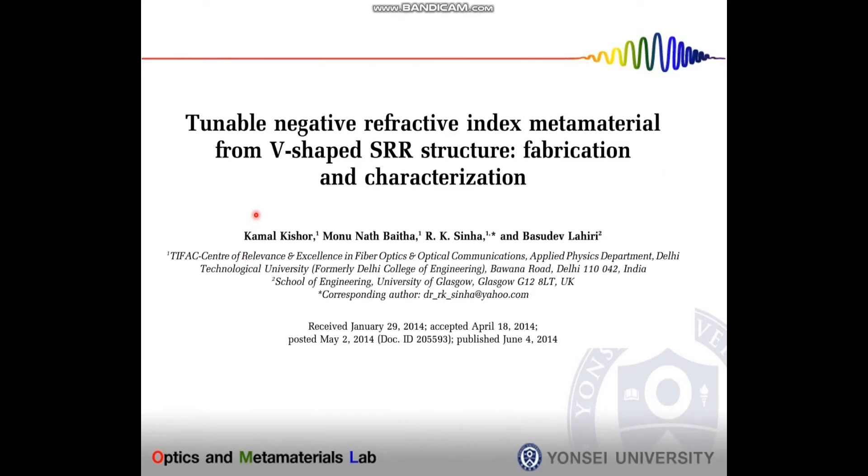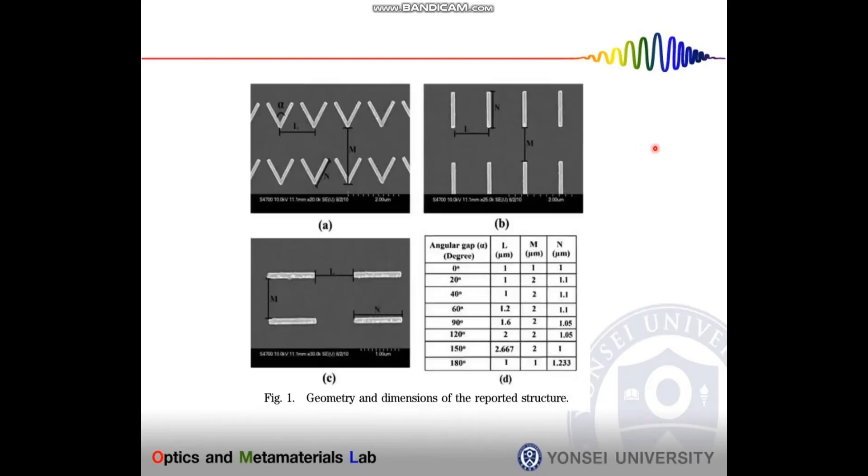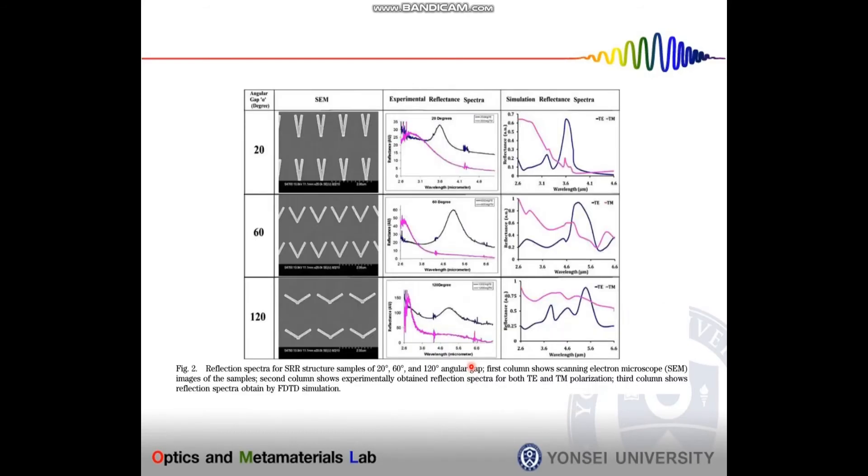Now, by using the previous concepts, we fabricated and studied the V-shaped SRR structure for the tunable negative refractive index metamaterial. Here, we fabricated a V-shaped metamaterial where we tuned the value of angular gap between both arms from 0 to 180 degrees and calculated the reflection spectra.